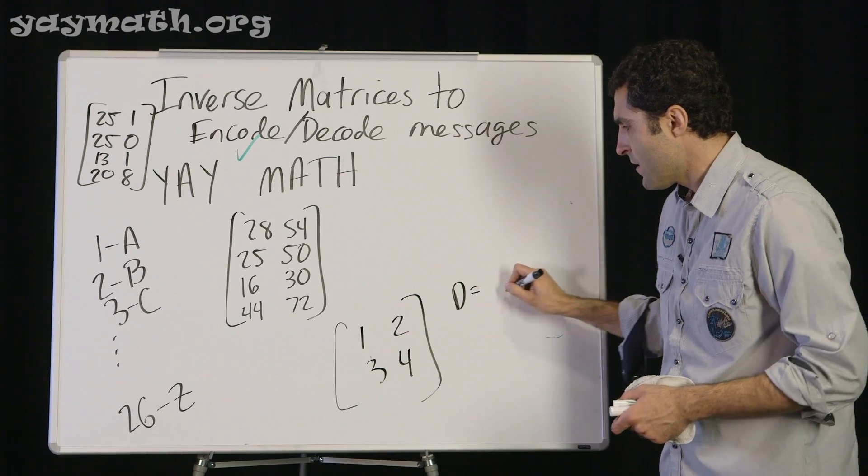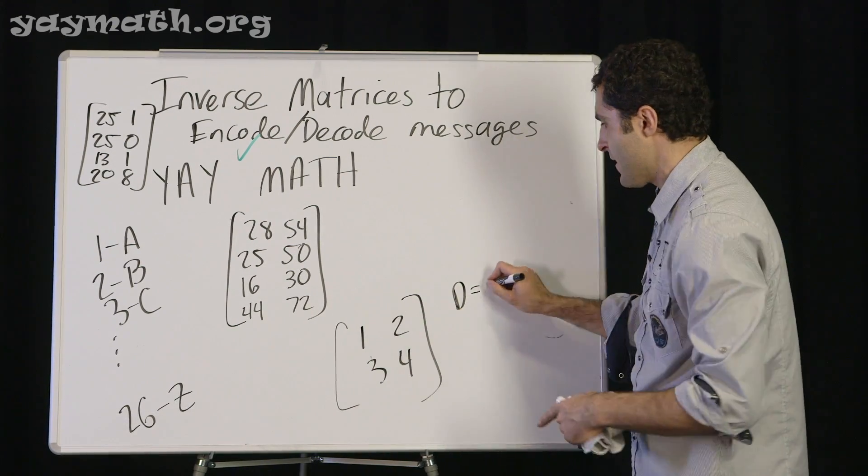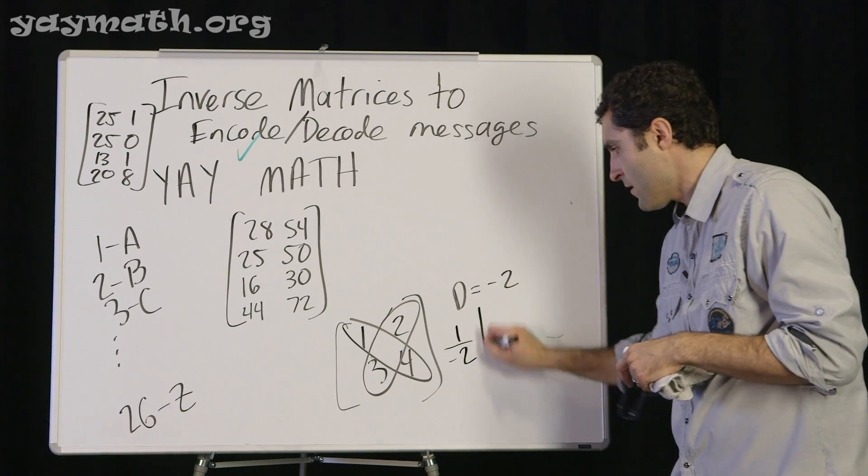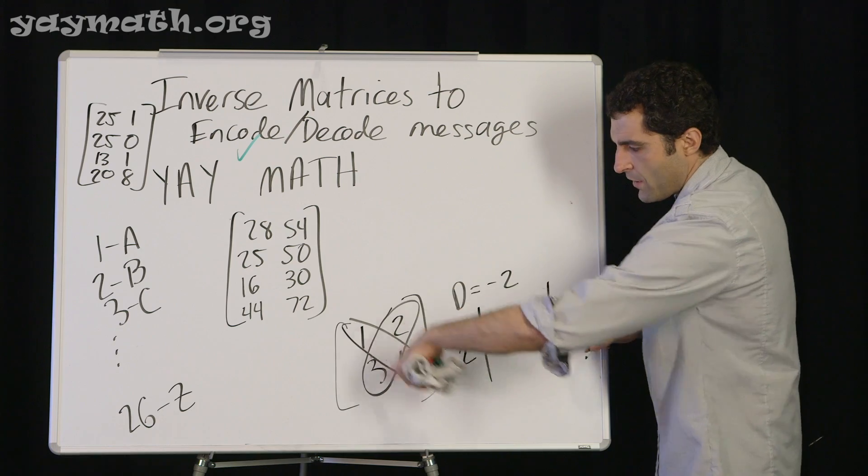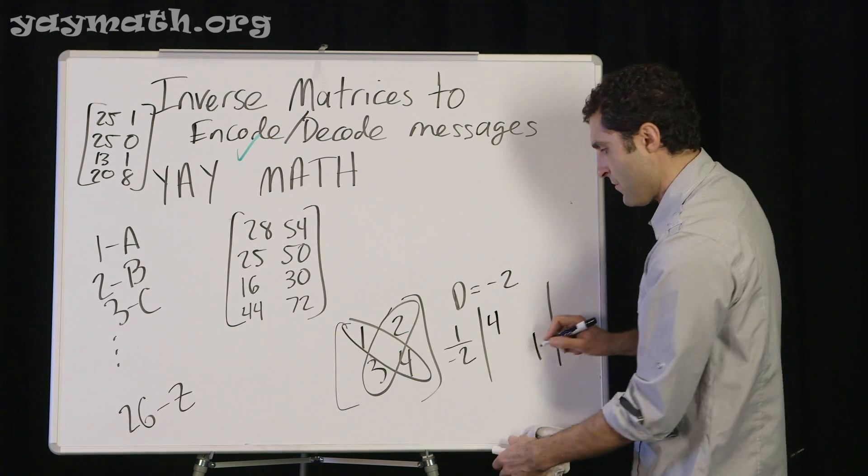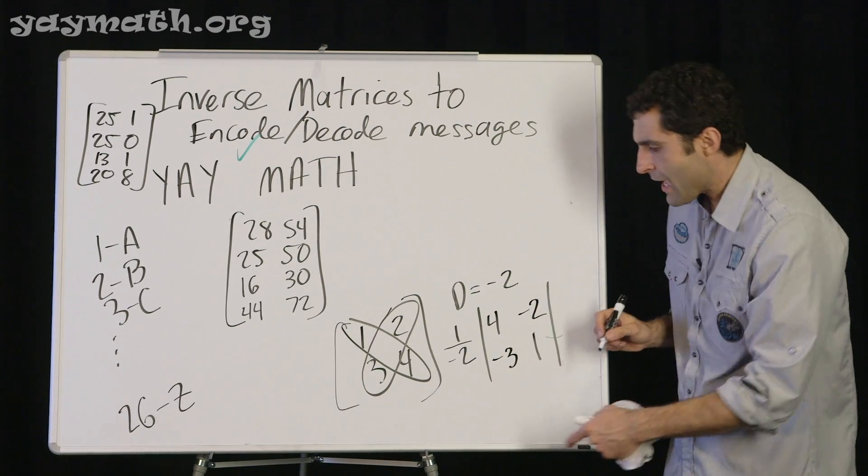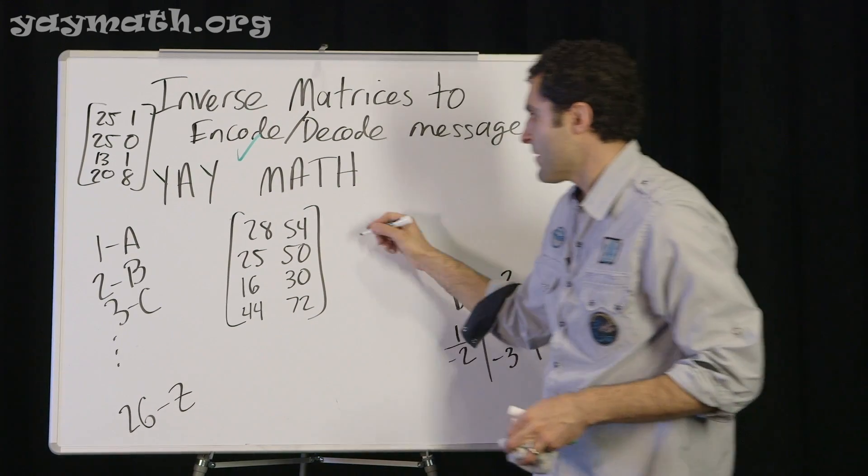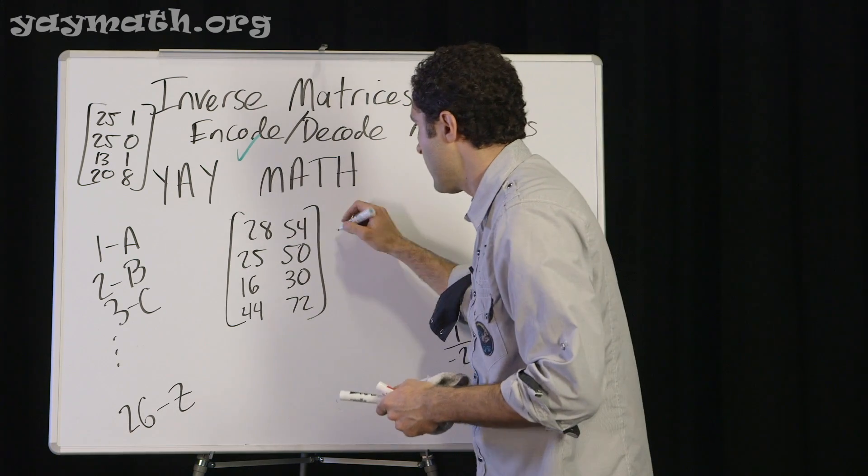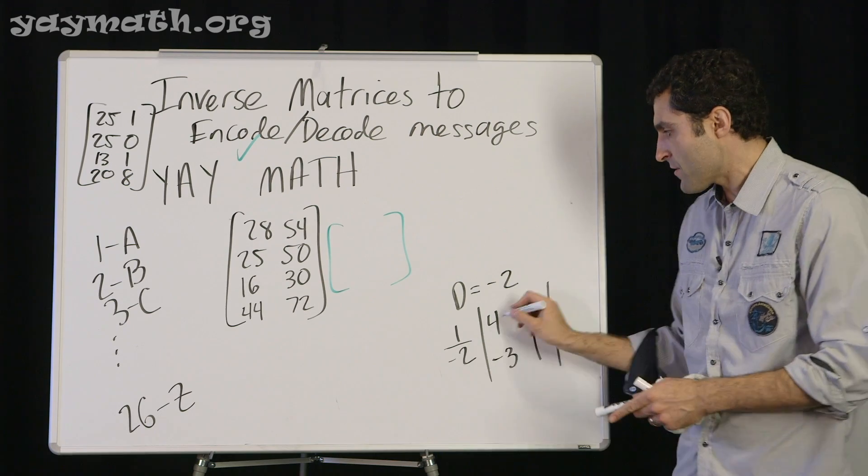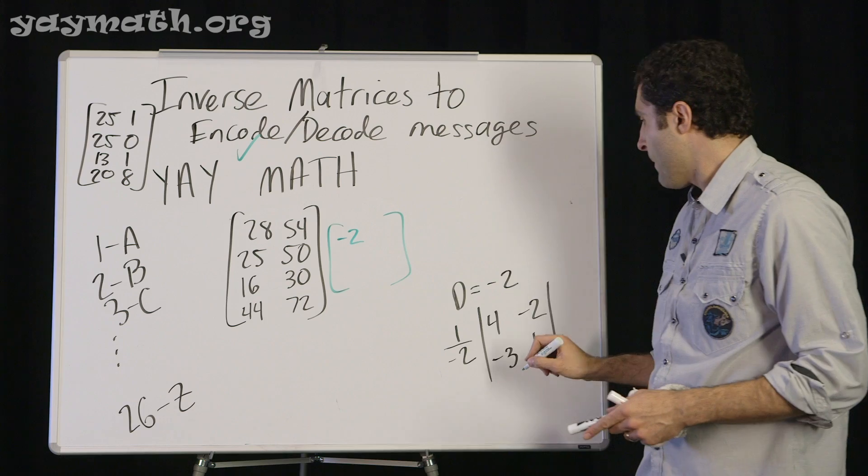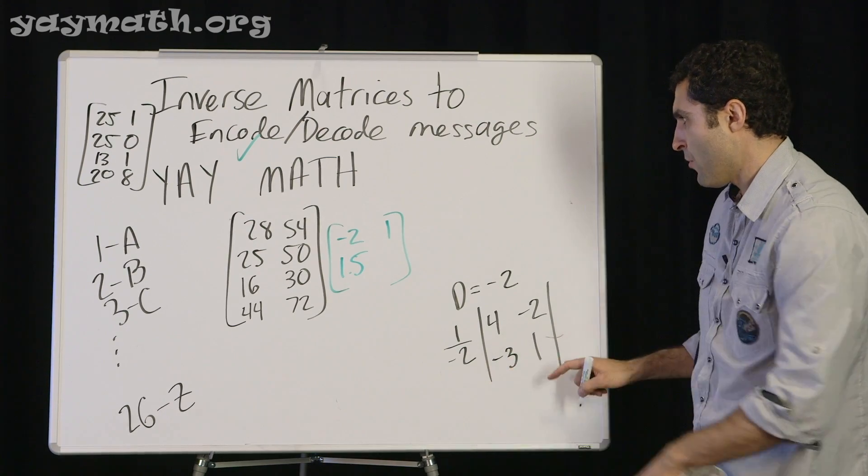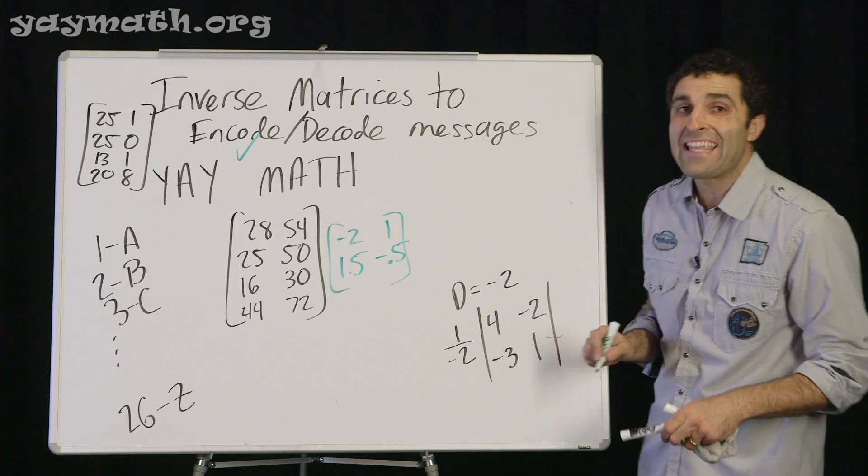If you recall, first we need to do is get the determinant. So the determinant is 4 minus 6 is negative 2. Multiply these two, subtract, multiply these two. 4 minus 6 is negative 2. And we do 1 over the determinant times - we do some flipping. Remember, we swap the 1 and the 4. We put 4 and 1 here. Swap those two. And then make those two negative: negative 3, negative 2. And then we distribute the negative 1 half within there. So if we distribute the negative 1 half within there, the inverse of 1, 2, 3, 4 is negative 2, positive 1, 1.5, and negative 0.5. So we multiply by the inverse of the encoding matrix.